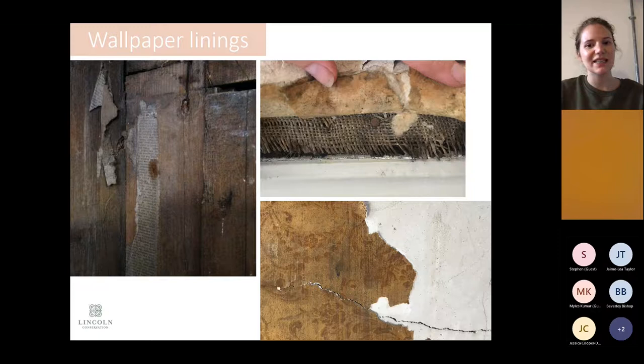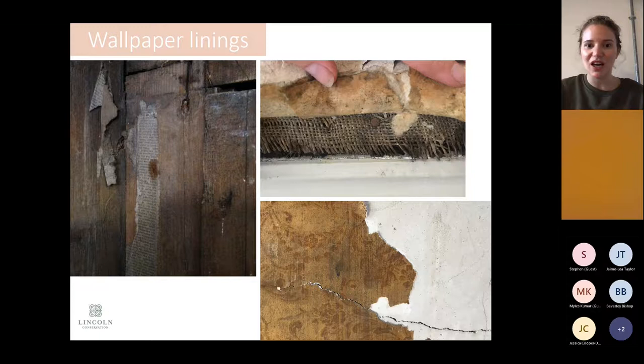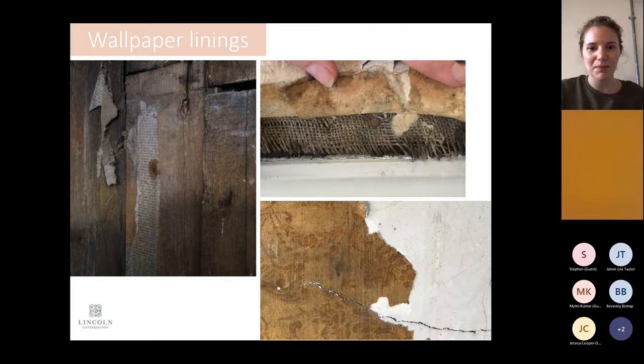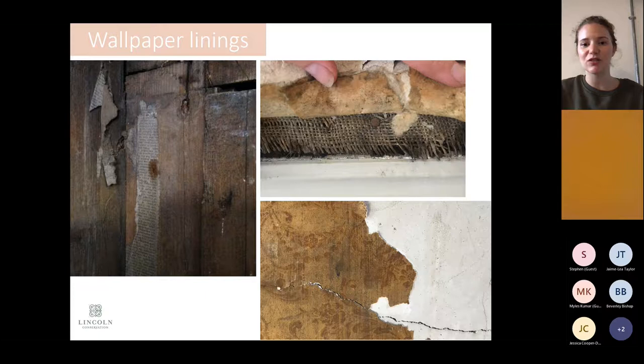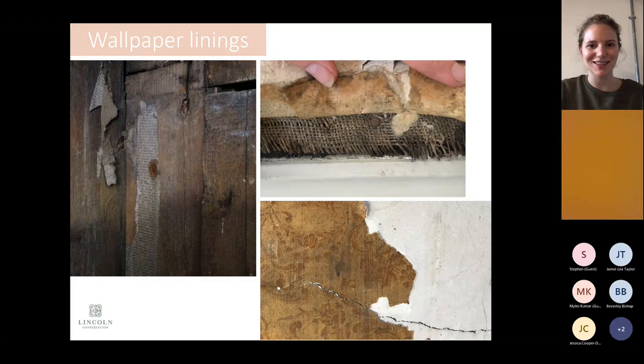In the 18th century, wallpaper was either pasted directly onto bare plaster or applied to canvas stretched across wooden battens. By the 19th century, canvas and batten hanging was more popular as it created a cleaner, smoother line. Around the 1810s, lining paper became popular to create a smooth surface. More often than not it was common to just recycle newspaper, so when you find this you have a nice date of when the wallpaper was applied — which makes dating much easier.